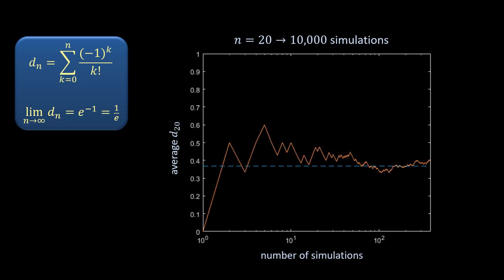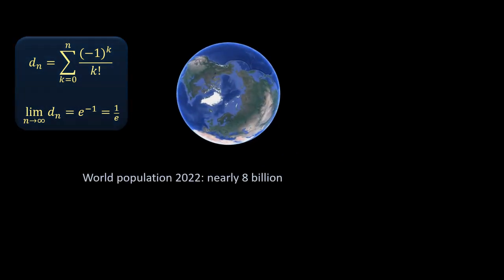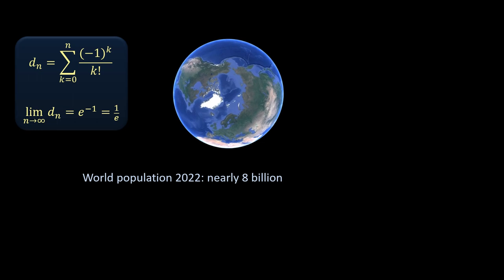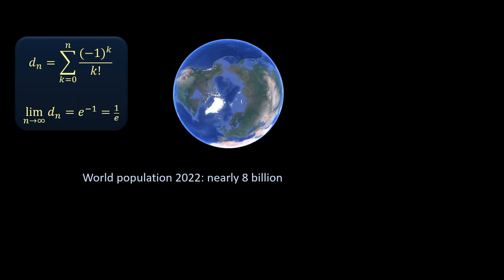As you can see, after some initial wanderings, the average proportion of derangements inescapably approaches 1 over e. As it should. Planet Earth, with a population pushing 8 billion in 2022.